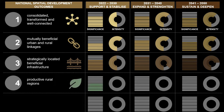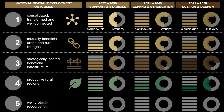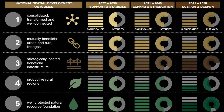National Spatial Outcome 4: productive rural regions, supported by sustainable resource economies and strong and resilient regional development anchors that provide access to people living in rural areas to the national and global economy. National Spatial Outcome 5: national ecological infrastructure and the National Natural Resource Foundation is well-protected and managed, to enable sustainable and just access to water and other natural resources, both for current and future generations.